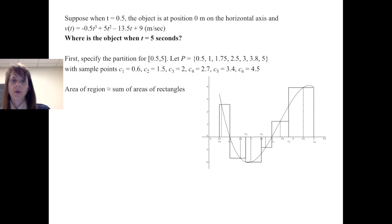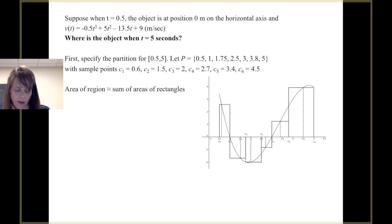So the first thing we're going to do is we're going to specify the partition on the closed interval from 1/2 to 5. We're going to use the partition P = {1/2}. We're going to mark that here on our graph. 1/2, 1, 1.75, 2.5, 3, 3.8, and 5.